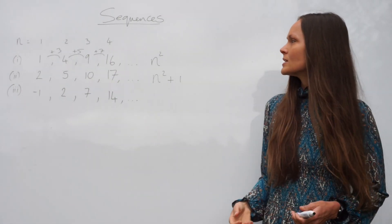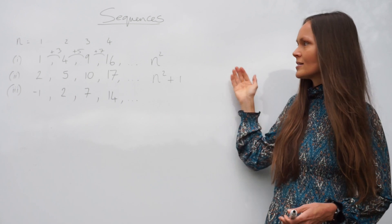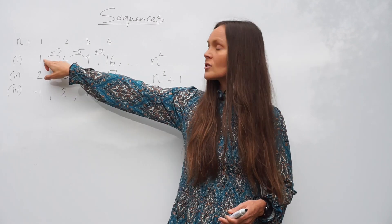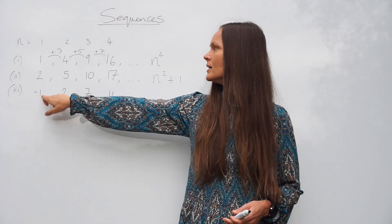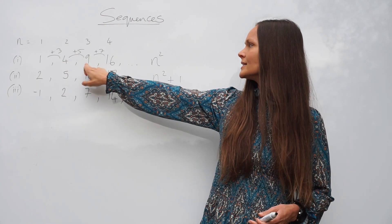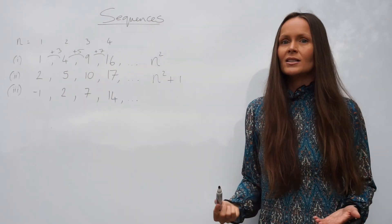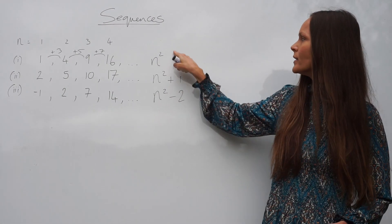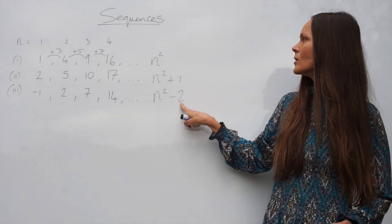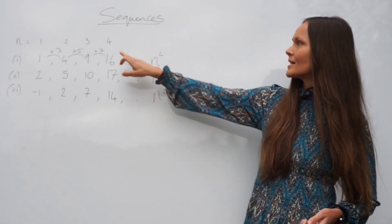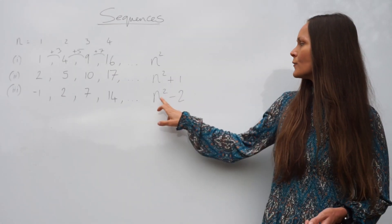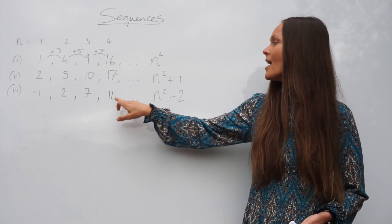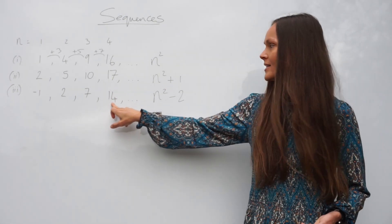Looking at the third sequence and comparing it to n squared again, this time we're subtracting 2 each time. Subtract 2 from 1 gives negative 1; 4 take away 2 is 2; 9 take away 2 is 7. Since we're subtracting 2 each time, the nth term is n squared minus 2. Checking the fourth term: 4 squared is 16, take away 2 gives 14, which is correct.